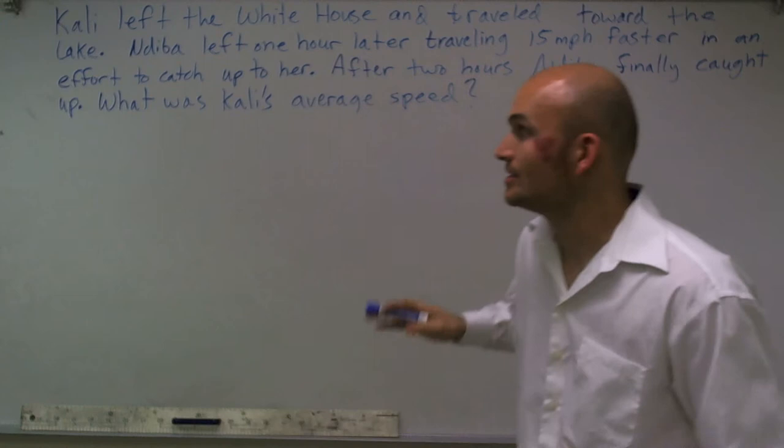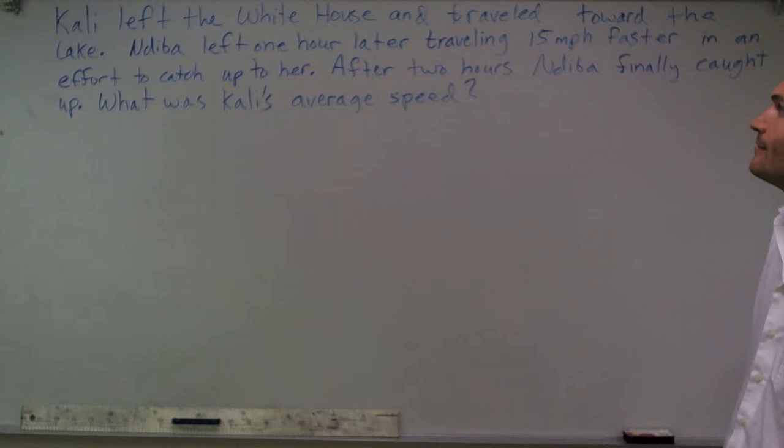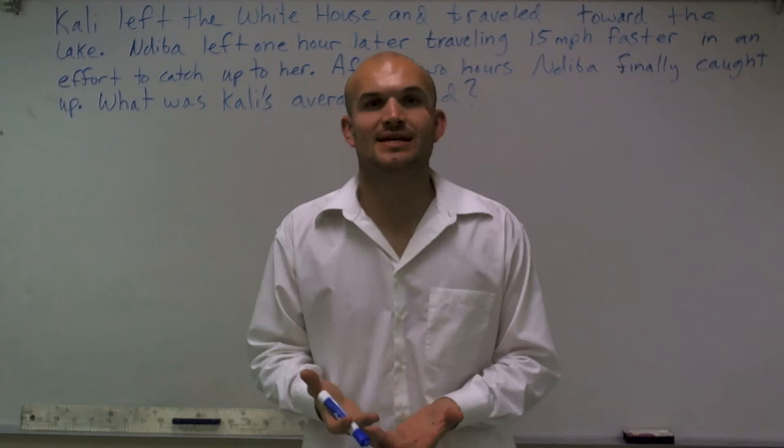Welcome. What I'd like to do is show you how to solve this distance rate problem. So the problem reads: Callie left the White House and traveled toward the lake. Nadeeba left one hour later traveling 15 miles per hour faster in an effort to catch up with her. After two hours, Nadeeba finally caught up. What was Callie's average speed?